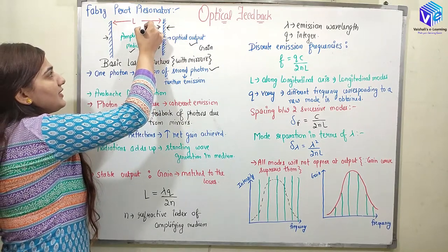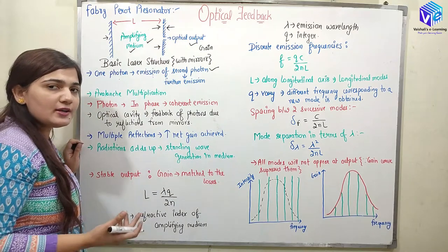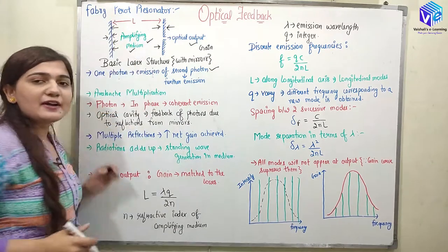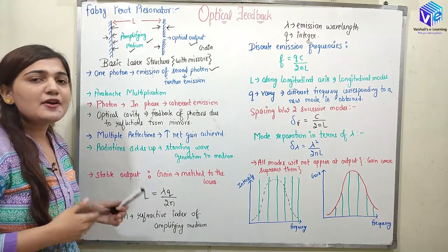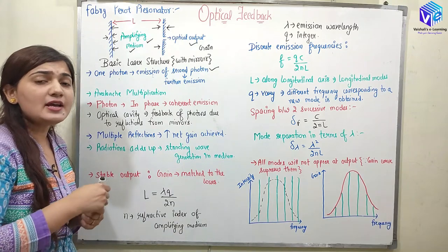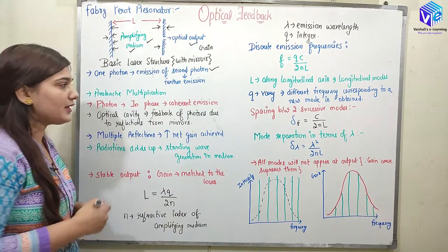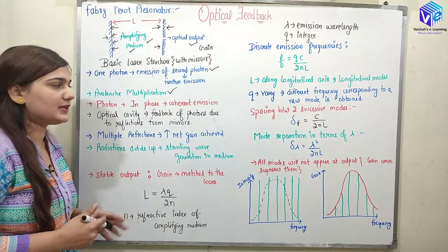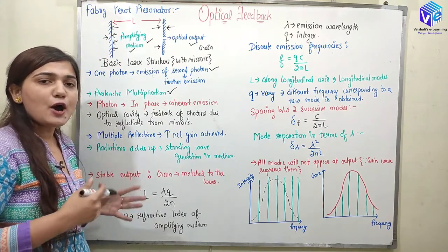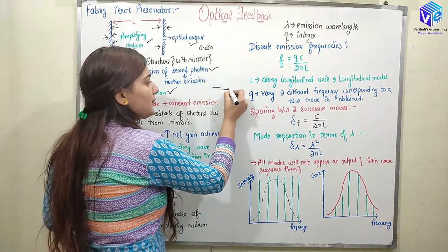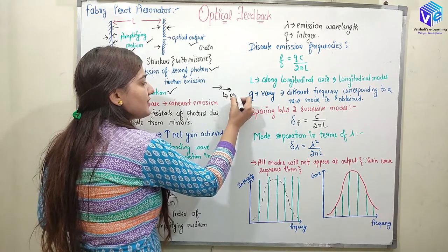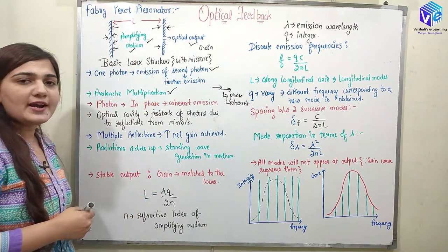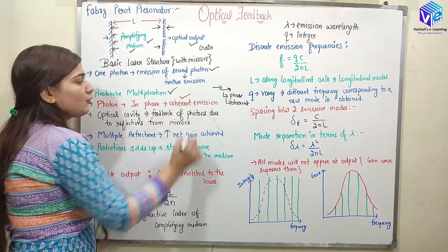When the two photons reflect back in the optical cavity they generate two more photons, giving us four photons. Four photons reflect back from the mirror and generate eight photons. This process keeps happening — this is how we generate a multiplied number of photons, and this is called avalanche multiplication. This is how we generate more and more photons inside the optical cavity. These photons are all in phase with each other, so they are called coherent photons, giving us coherent emission.